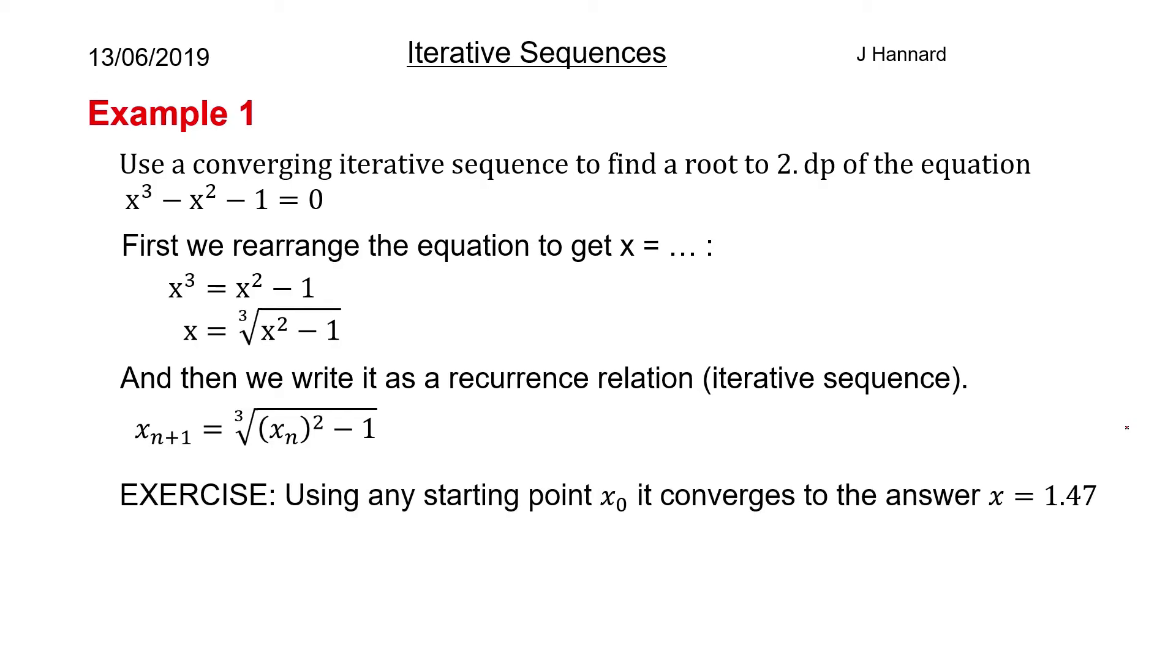So you've got that there. So basically, do this as an exercise now. Pause the video, and you will find that using any starting point x₀—you can pick x₀ to be 1, 50, 700—eventually it will converge to an answer of x equals 1.47. Try it with as many values as you want or you feel you have to. The answer converges to 1.47 after a few iterations. So do that now. Pause the video and let me know down in the comments whether it worked.